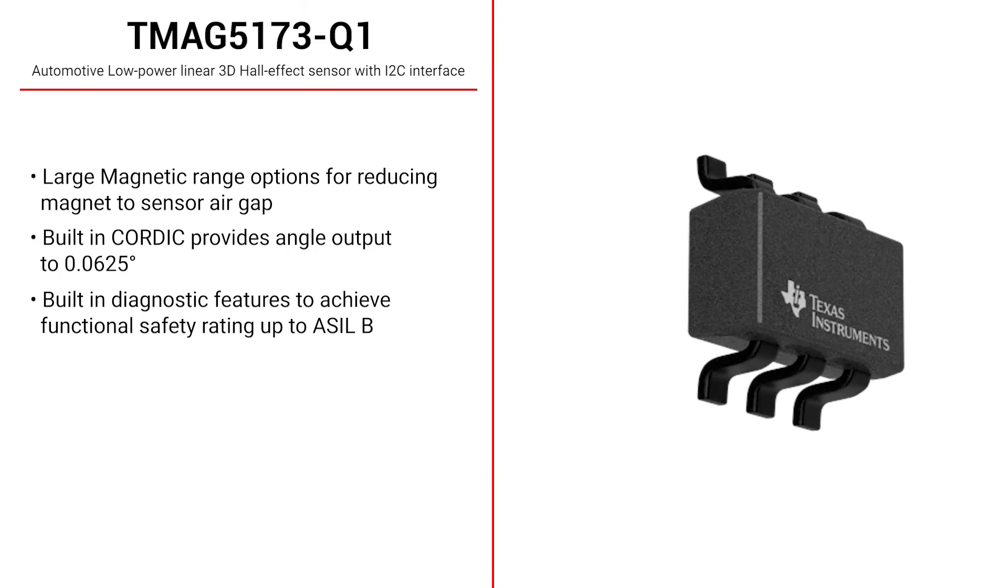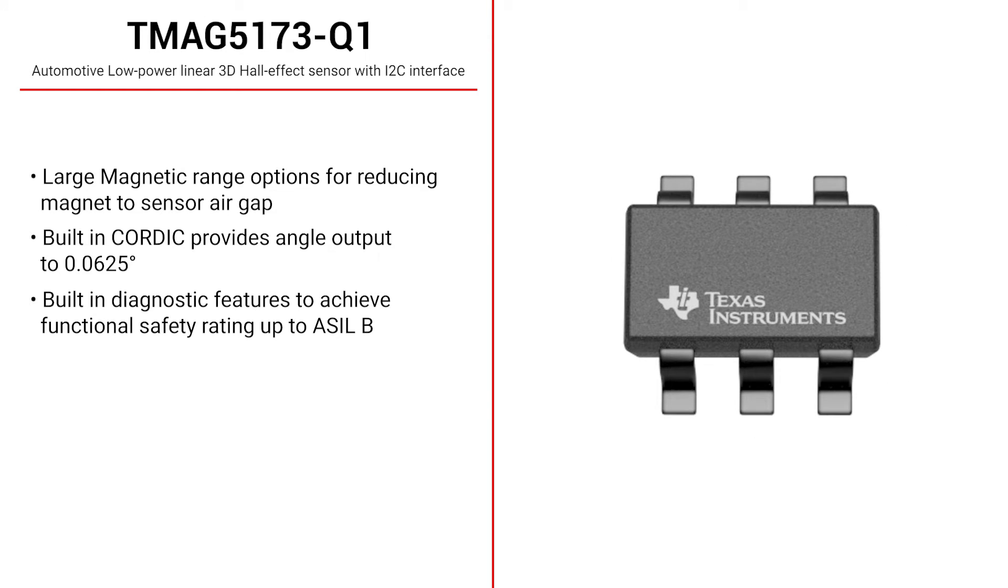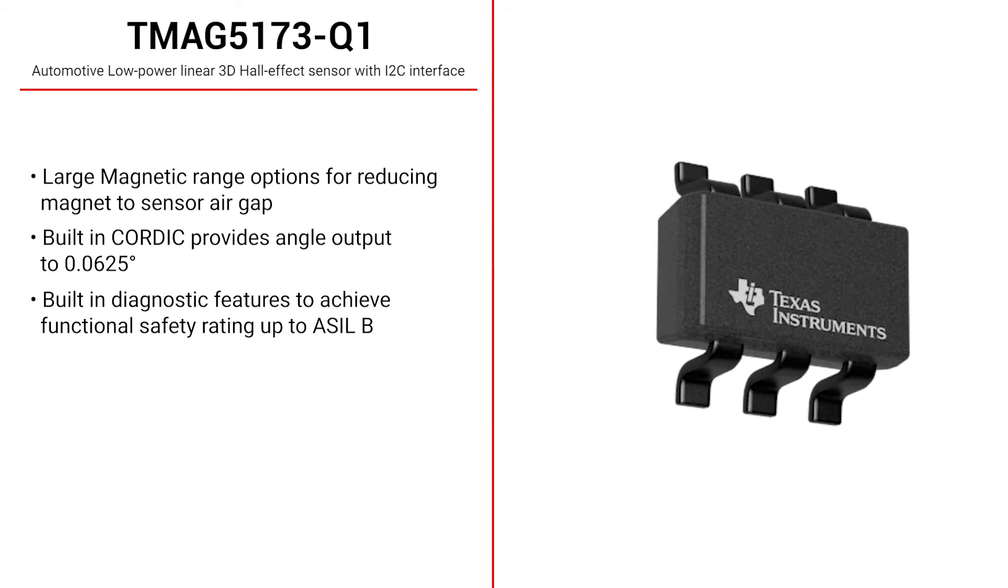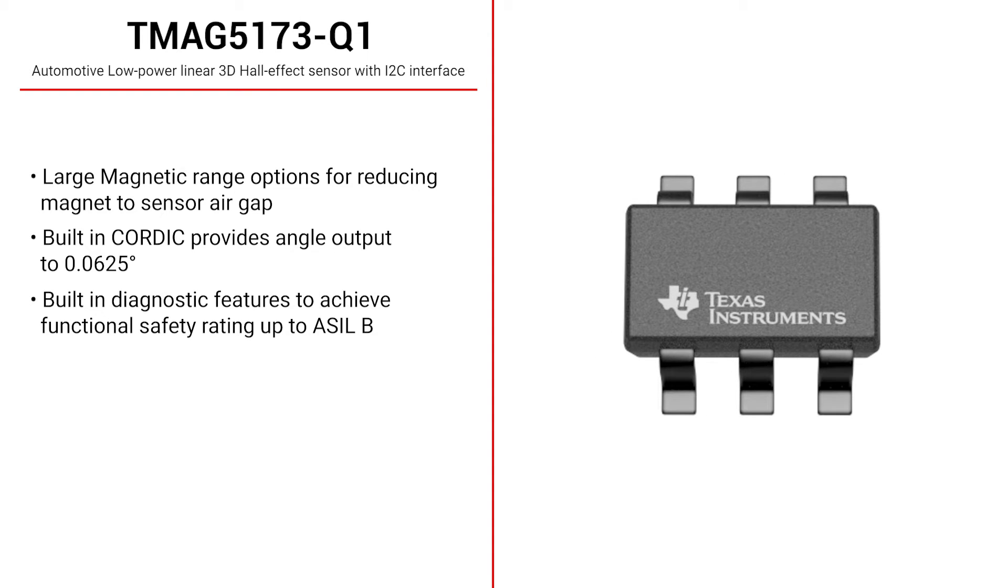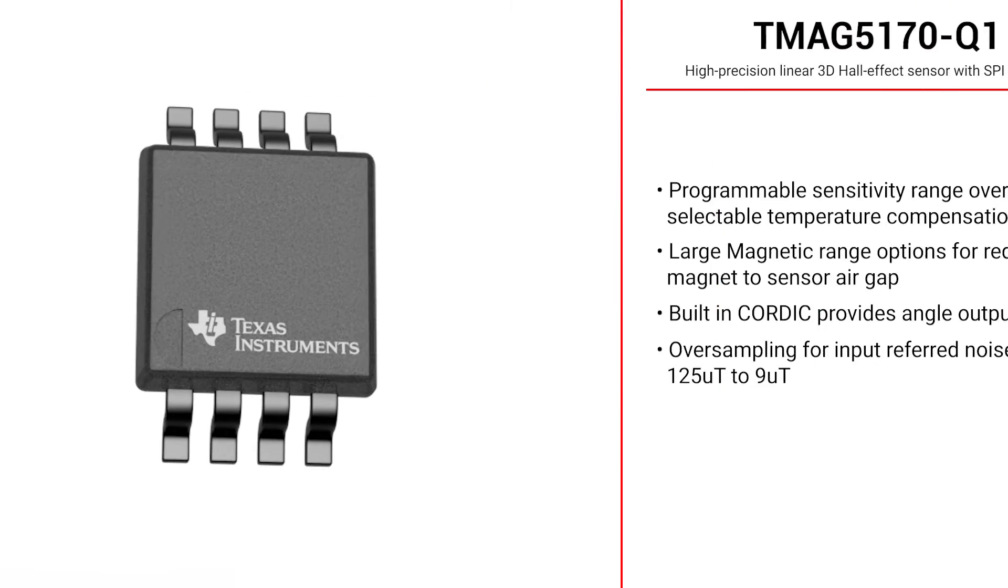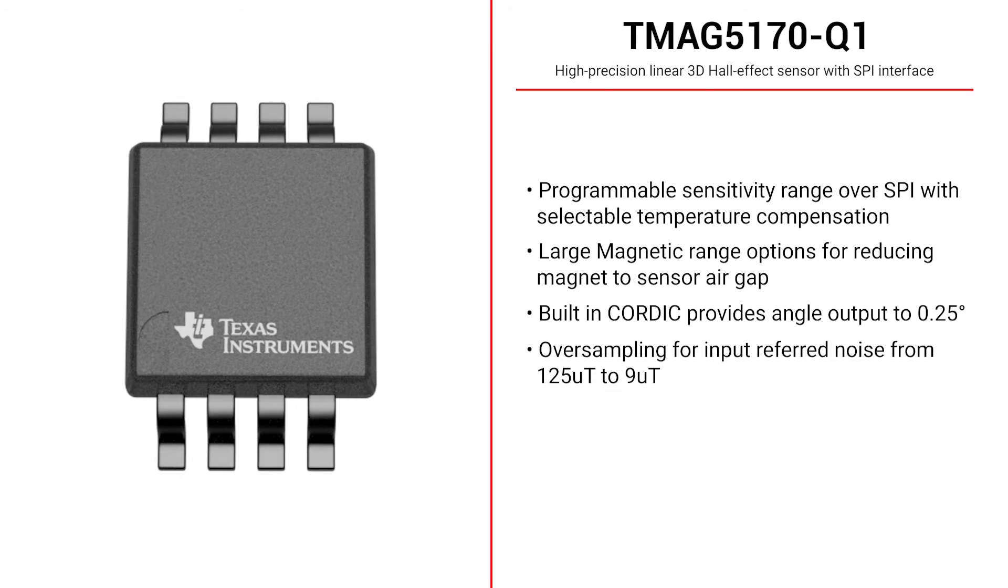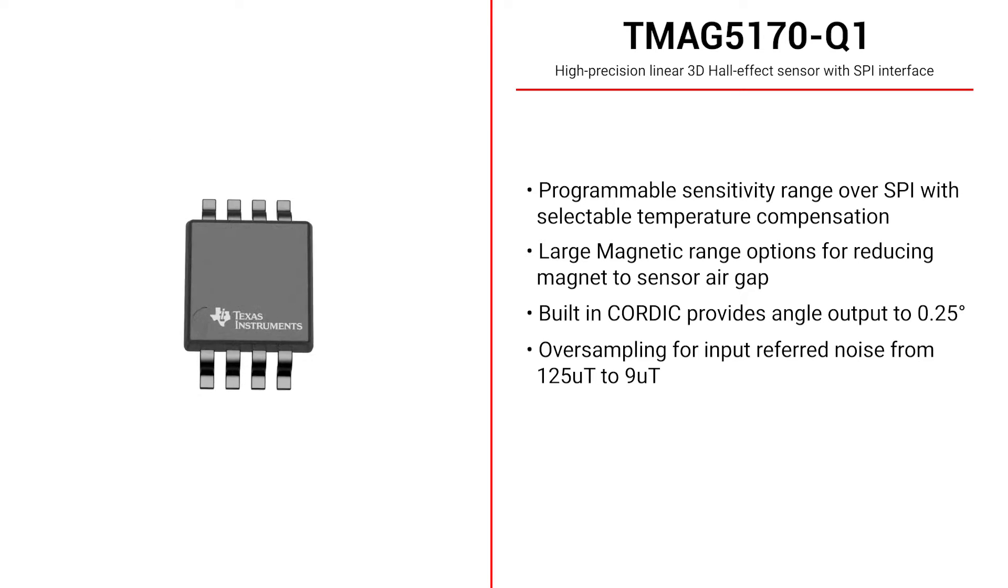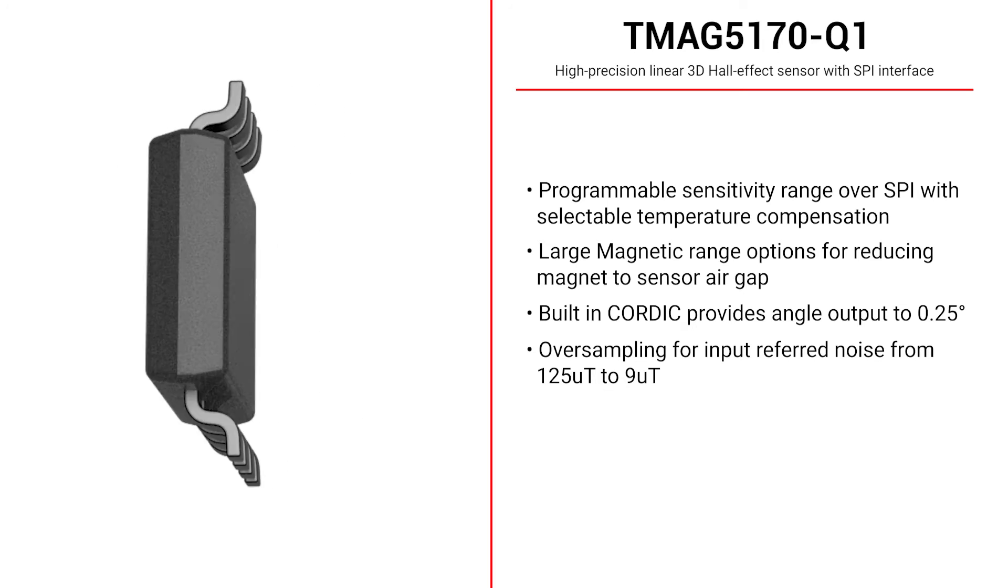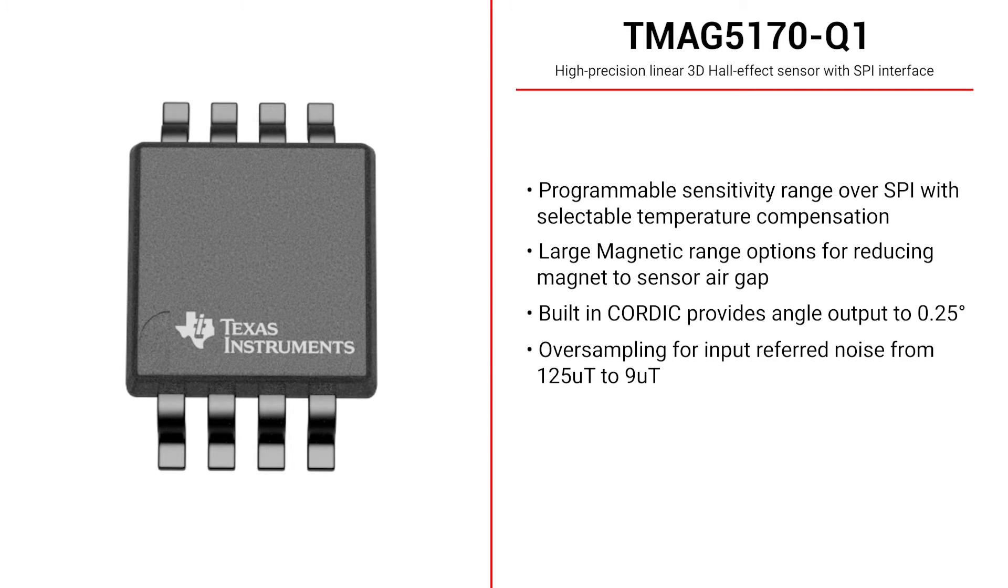The TMAG5173Q1 is a great alternative for automotive solutions or applications that require additional diagnostic features. It also communicates over I2C with a CORDIC output resolution of 1/16th of a degree. The TMAG5173 is also a 3D linear Hall effect sensor that communicates its output magnetic data digitally over SPI. All of these devices have amplitude and offset correction to provide precise angle calculations over various mechanical implementations.